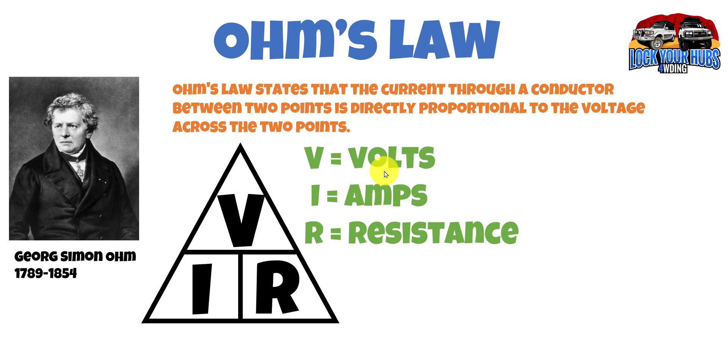So we have voltage, amperage and resistance. Now you can read the description up here. It says Ohm's law states that the current through a conductor between two points is directly proportional to the voltage across those two points. Doesn't really matter for our purposes. The VIR triangle is the one you need to remember. Okay and that states that the voltage equals the amperage times the resistance.